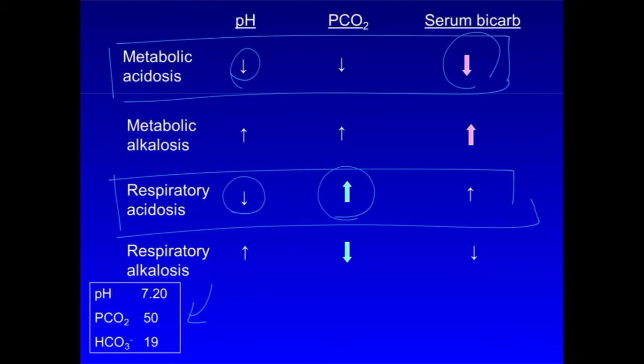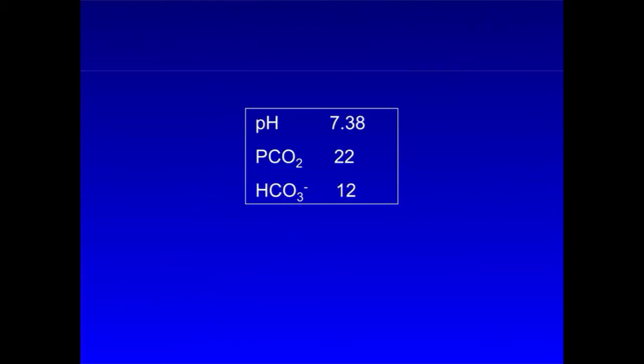In our second example, pH is 7.38, PCO2 22, and bicarb 12. Here you have a disparity in the degree of abnormality of the three parameters.